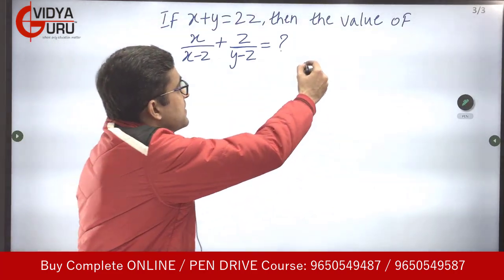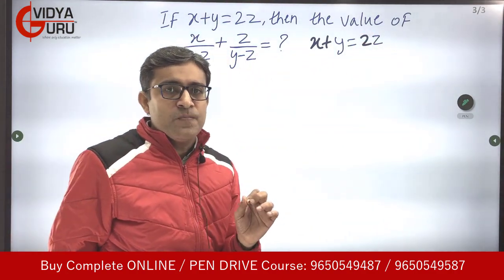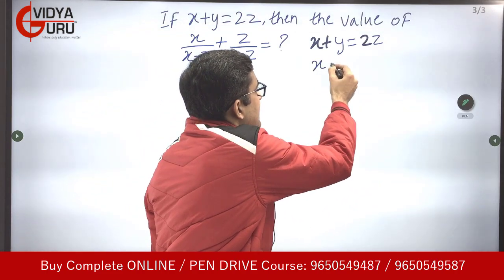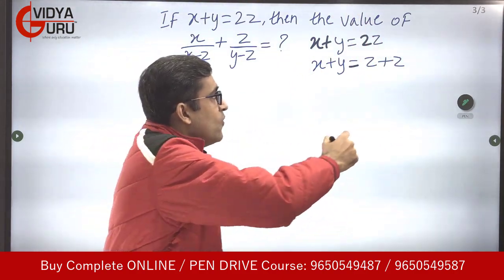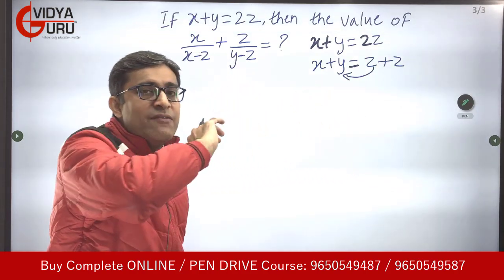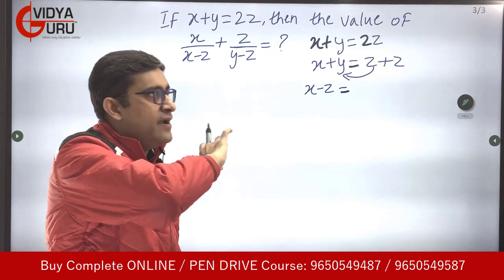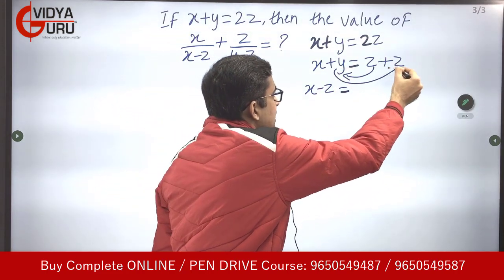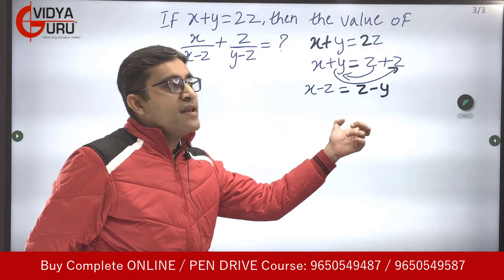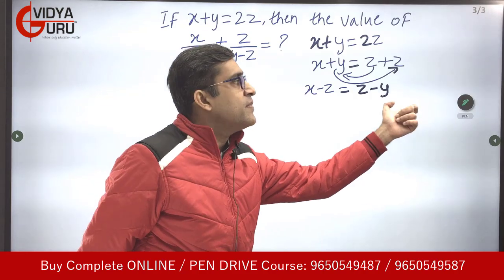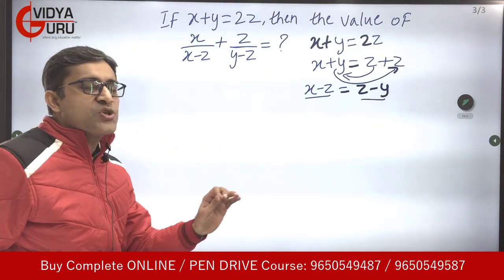Let's start working with x + y = 2z. I will write 2z as z + z. Now I take one z to the other side to get x − z on the left-hand side. Then taking y to the other side, it takes a negative sign. So x − z = z − y. We now have this negative expression x − z = z − y, which we'll use in the expression.